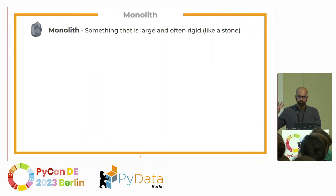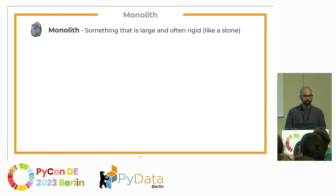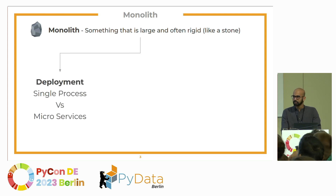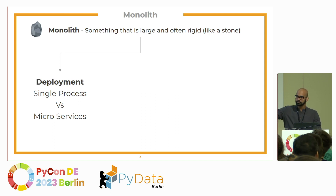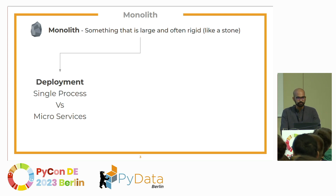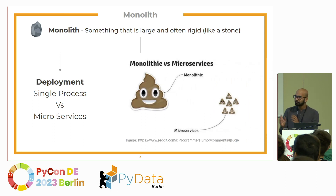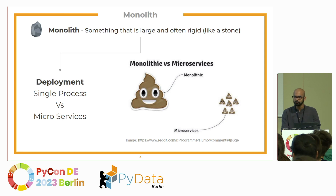A monolith is basically something that's large and rigid — it's a very generic word, it just means rigidity. When we say monolith architecture, we're typically talking about deployments: do we want to take our entire codebase and deploy it on a single server, or do we want to run it on a Kubernetes farm and deploy it in different ways? Just changing your architecture may not mean that you have better code. If you had bad code in a monolith, you're just going to have many pockets of smaller bad code when you move to a microservice architecture.